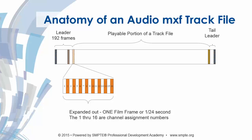Looking at the anatomy of an MXF track file: the 16 channels of PCM audio are frame-wrapped, so those 16 channels represent 1/24th of a second, assuming 24 frames per second and 48 kHz sampling rate. Each frame holds 2,000 samples per channel. In Interop, channel 1 routes to left, channel 2 to right, channel 3 to center, channel 4 to subwoofers, channel 5 to left surround, channel 6 to right surround, and so on according to the ISDCF spec. When people master and play back according to the ISDCF, everything works perfectly.